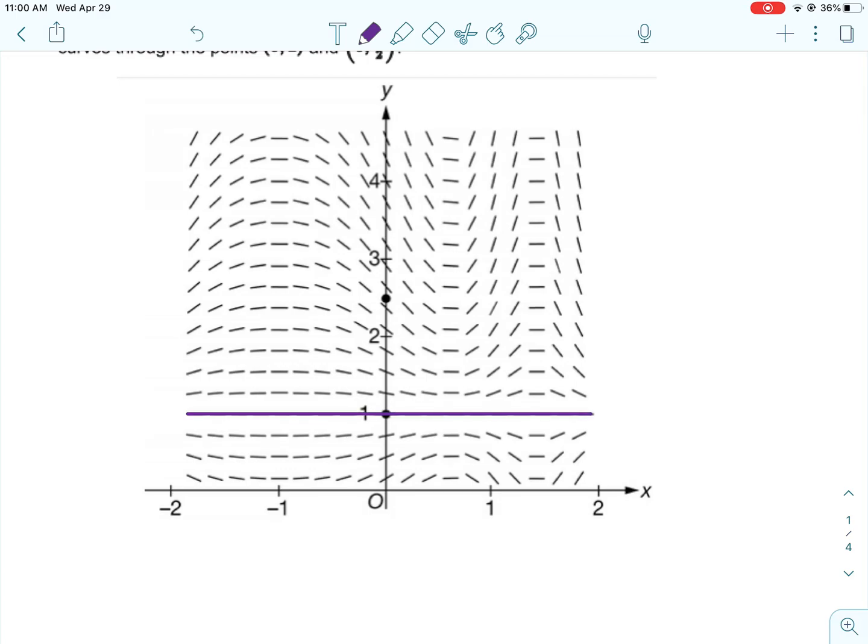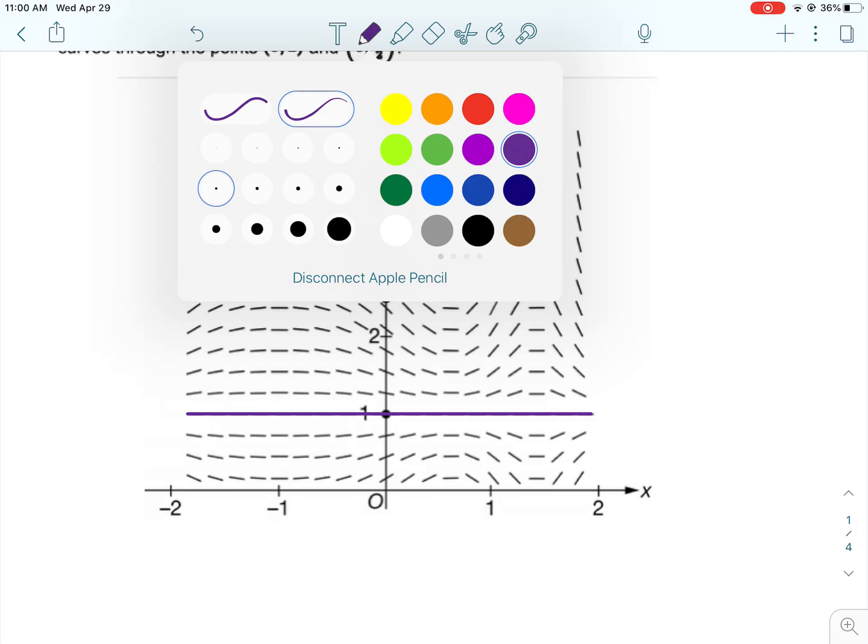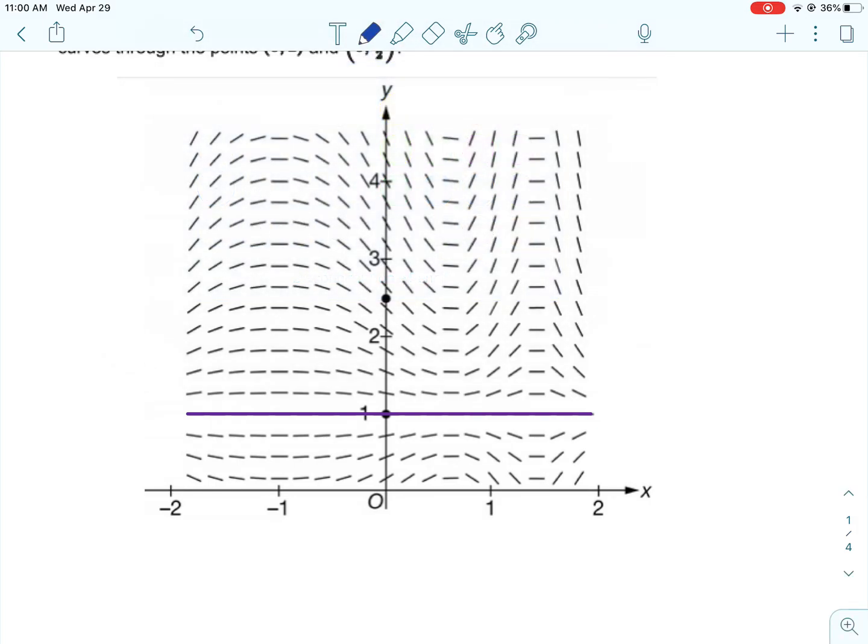The first thing we're going to do is we're going to draw a couple of solutions through our slope field. First, we're going to sketch the solution through the point (0, -1), which is darkened right here. So that is just going to be a horizontal line. So there's that one.